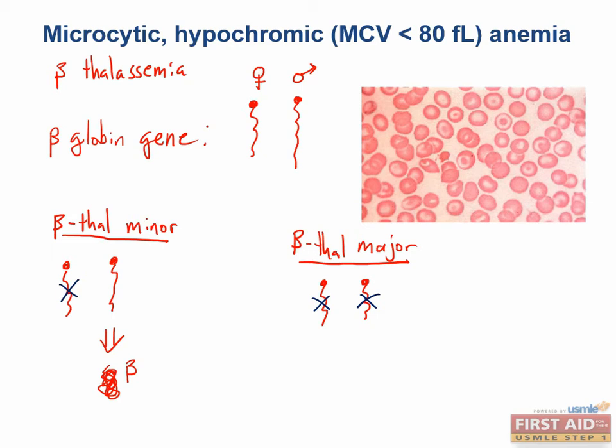The treatment for beta-thalassemia major is regular transfusions throughout life. Unfortunately, this leads to its own consequences: iron overload or secondary hemochromatosis, congestive heart failure, edema, and increased risk for blood-borne pathogens. These patients appear normal for the first few months of life because they can make hemoglobin F normally; symptoms don't appear until hemoglobin F switches to hemoglobin A. Hemoglobin electrophoresis would show no hemoglobin A, with increased levels of both hemoglobin A2 and F.